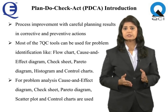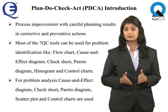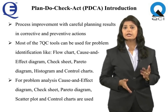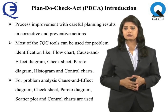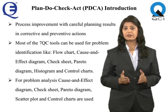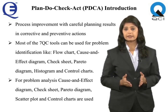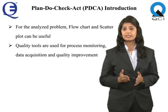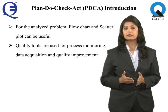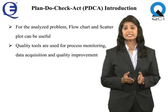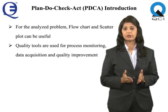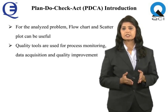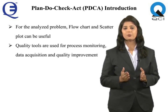Most of the seven QC tools can be used for problem identification: flow chart, cause and effect diagram, check sheet, Pareto diagram, histogram, and control charts. For problem analysis, cause and effect diagram, check sheet, Pareto diagram, scatter plot, and control charts are used. When a team is developing a solution for the analyzed problem, flow chart and scatter plot can be useful as well. For effective team work in solving daily quality problems, a simple model for systematic usage of basic quality tools is proposed for process monitoring, data acquisition, and quality improvement.